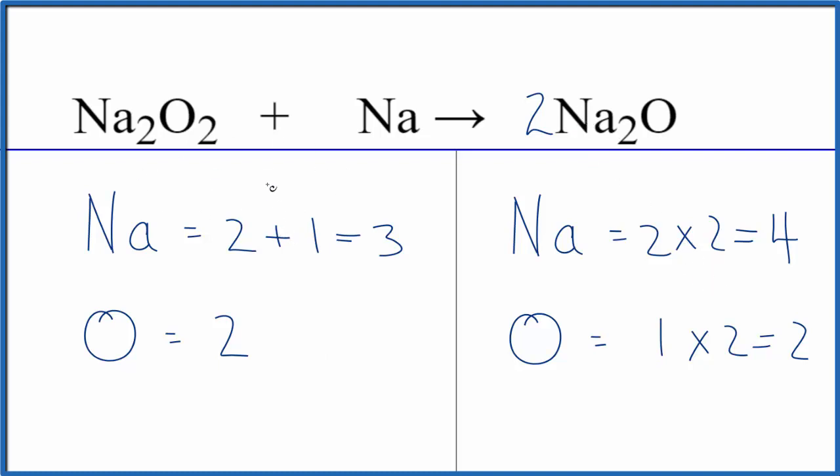because right now I have two sodiums here and just one here. If I put a 2 in front of the sodium, now we have two plus two, and that gives us four. This equation is balanced.